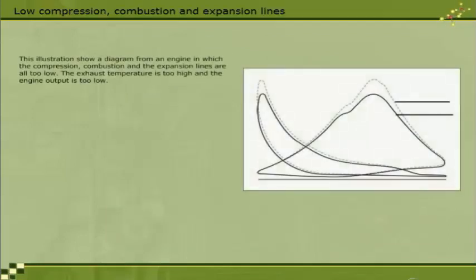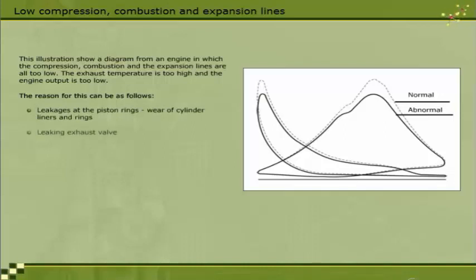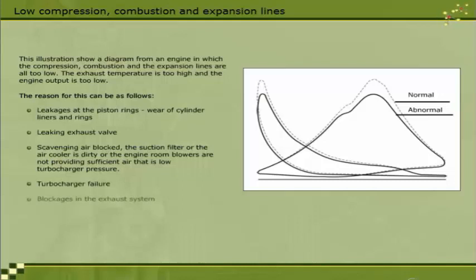This illustration shows a diagram from an engine in which the compression, combustion and expansion lines are all too low. The exhaust temperature is too high, and the engine output is too low. Reasons include: leakages at the piston rings; wear of cylinder liners and rings; leaking exhaust valve; scavenging air blocked; the suction filter of the air cooler is dirty, or the engine room blowers are not providing sufficient air, i.e., low turbocharger pressure; turbocharger failure; or blockages in the exhaust system.